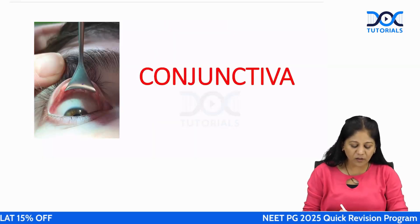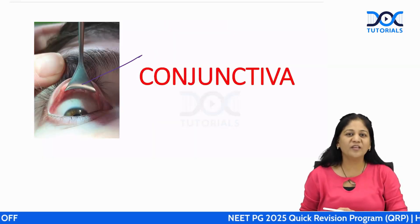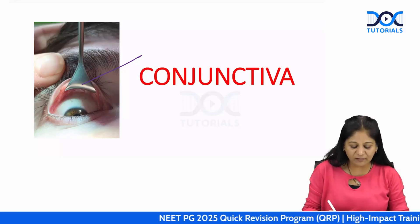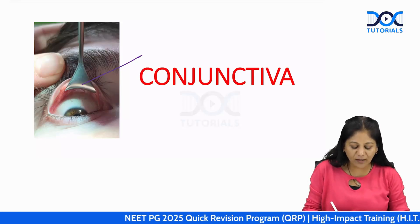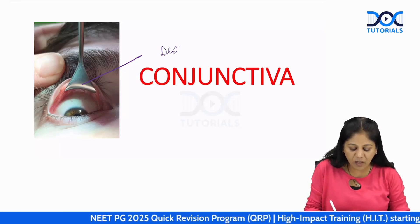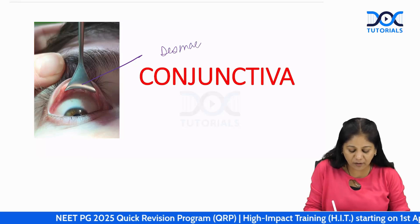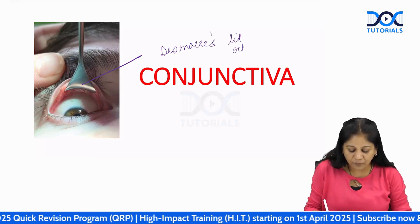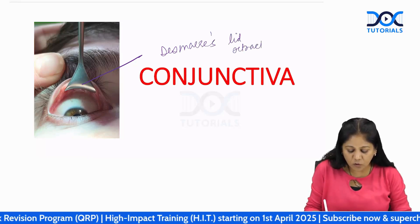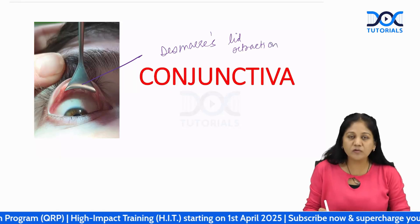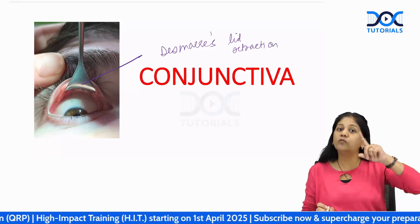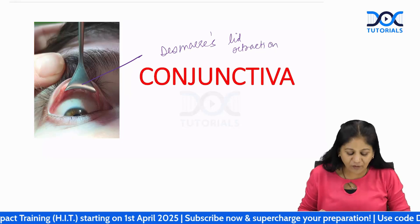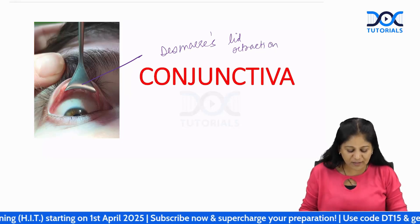To visualize the upper conjunctiva, we use a retractor called the Desmarres lid retractor. This is an instrument used to see mainly the upper part of the conjunctiva.